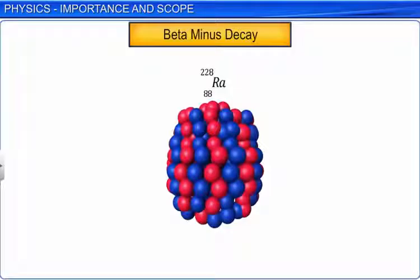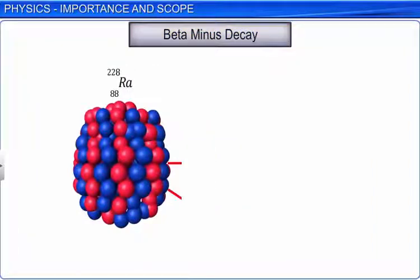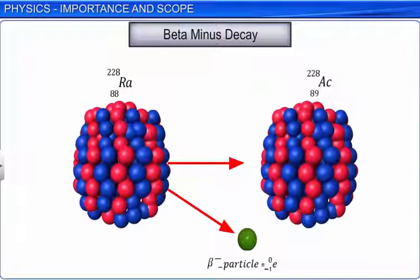Weak nuclear force comes into existence in case of beta decay of a nucleus. In beta decay, the nucleus emits an electron and an uncharged particle called neutrino.